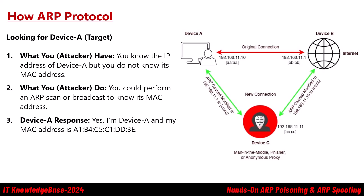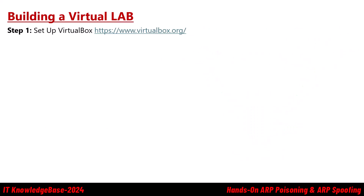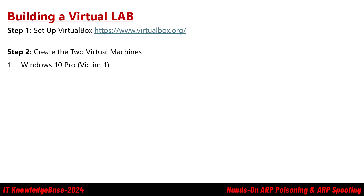Now that you know what ARP protocol is and how it works, you can easily learn how ARP poisoning — also known as ARP spoofing — works. Let's build a virtual lab. Download and install VirtualBox: visit the VirtualBox website, download the latest version for your operating system, and follow the installation instructions. Then create two virtual machines — one running Windows 10 Pro (the victim) and one running Kali Linux (the attacker). Allocate at least 2GB of RAM and create a virtual hard disk.